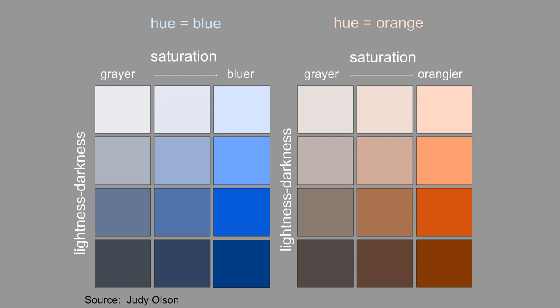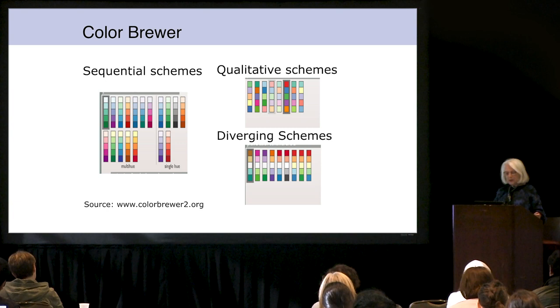I wish my only improvement to the slide would be to say darkness, lightness, so that it went in the same order as the figure goes. But that's what we mean by hue, saturation, and lightness.